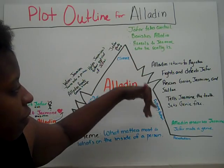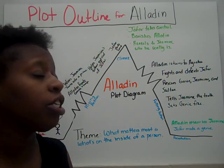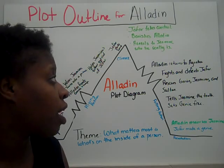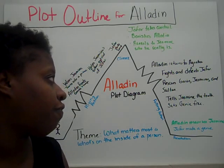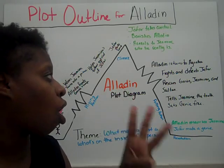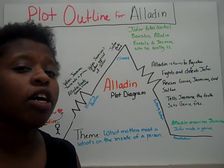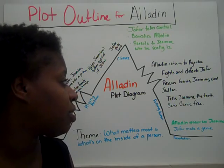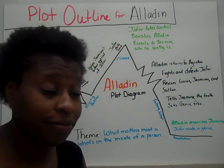Let's go down to the falling action. In the falling action, Aladdin returns to Agrabah to set things right. He fights and defeats Jafar. He rescues the genie, Jasmine, Carpet, Abu, and the sultan. He tells Jasmine the truth of who he really is, and he ultimately sets the genie free.